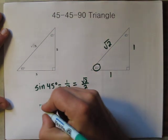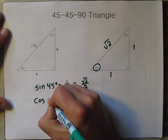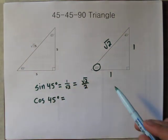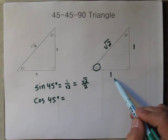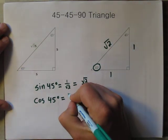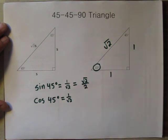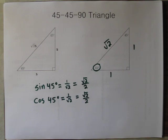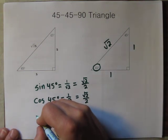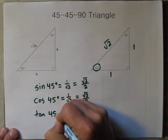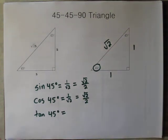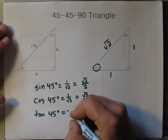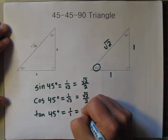Next, the cosine of 45 degrees is the adjacent side — that's this 1 — over √2. So we end up with 1 over √2 again, which when we rationalize is √2 over 2. Now let's find the tangent of 45 degrees. Tangent 45 degrees is opposite over adjacent, so 1 over 1, which just equals 1.